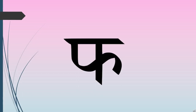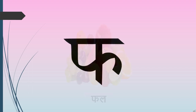Children, let's see words starting with letter Fa. This is Vyanjan Fa. Fa say Fal — Fa say Fal. Fal means all fruits.